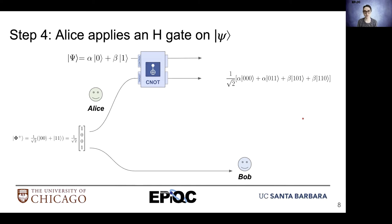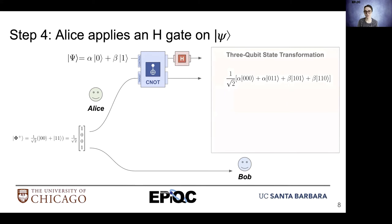In the next step, Alice will apply an H gate, or a superposition gate, to the mystery message qubit psi. That will cause the following state transformation.